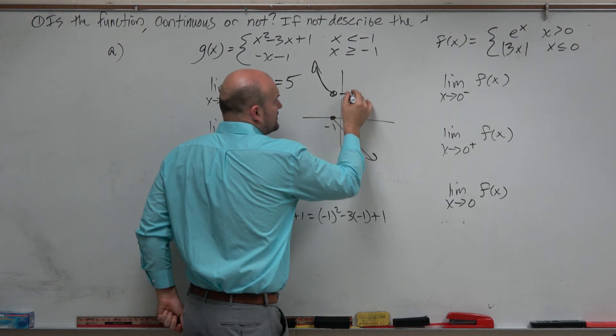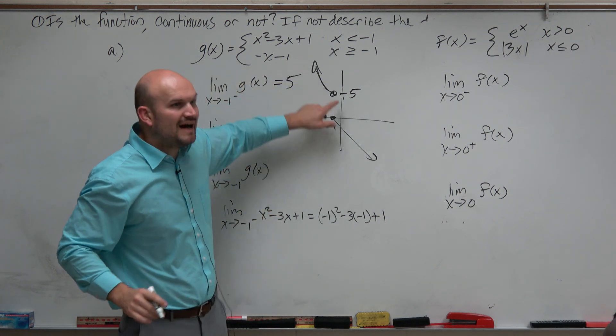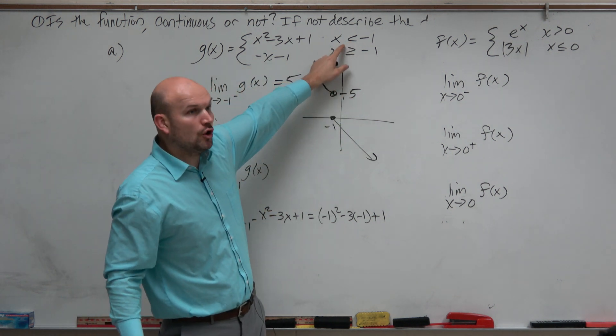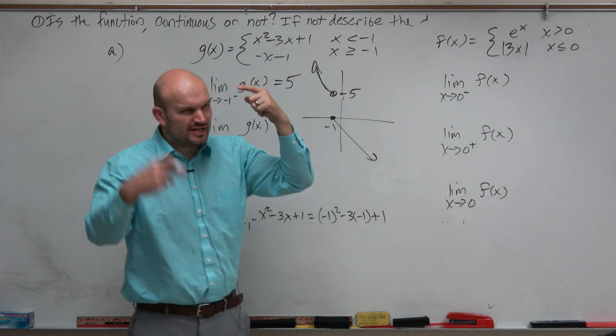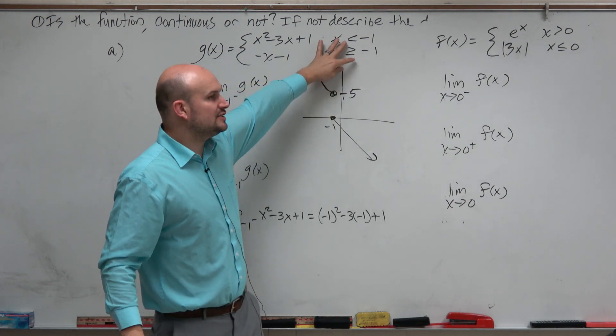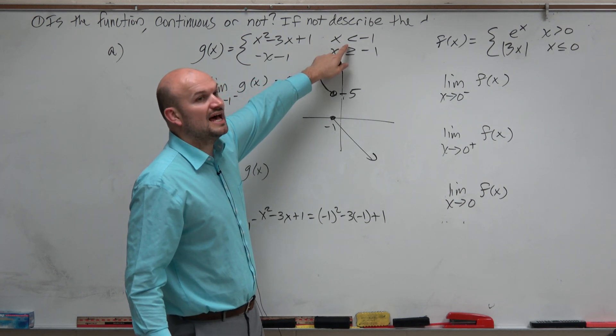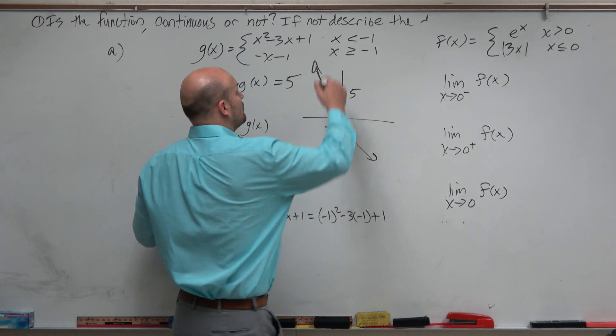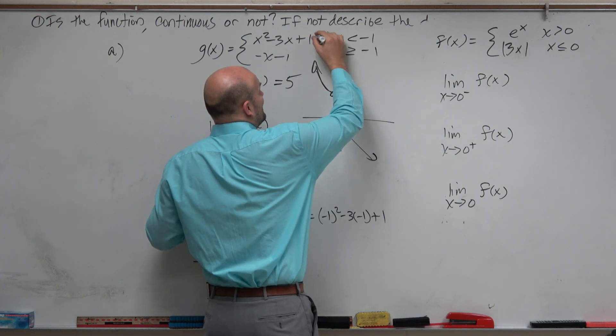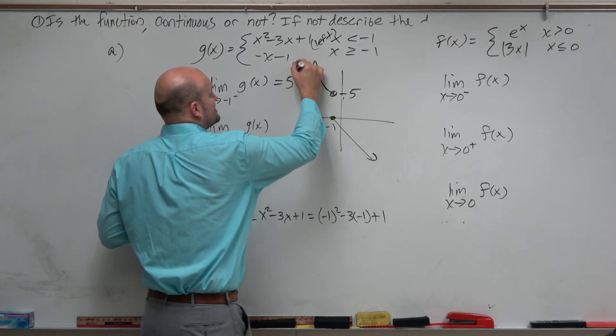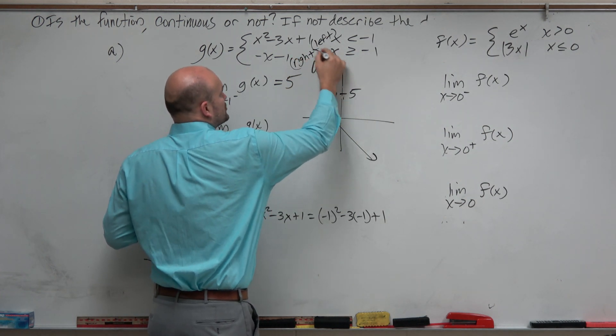That is the y value we are approaching. We're approaching 5. Does it ever equal 5? No, because that's a hole there. Another way to think about this is look at these restrictions. This graph is for all values left of negative 1, so this is like my left function. For all values greater than negative 1, this is kind of like my right function.